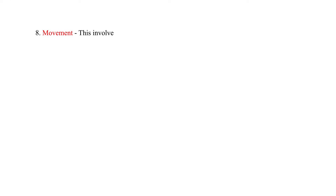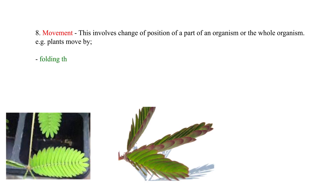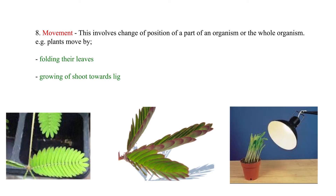Eight: movement. This involves a change of position of a part of an organism or the whole organism. For example, plants move by folding their leaves or by the growing of shoots towards light. Note that movement of the whole organism is known as locomotion.